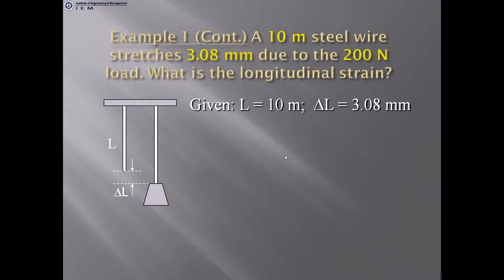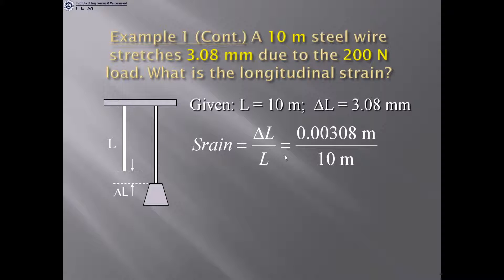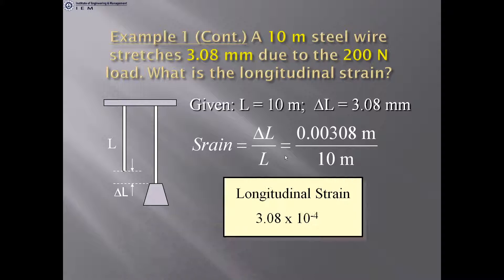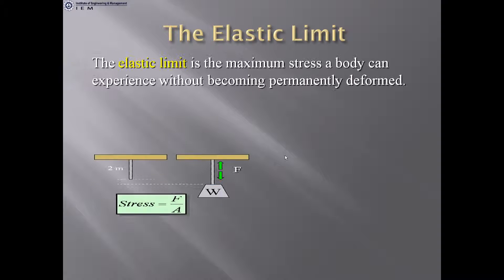A 10-meter steel wire stretches 3.08 mm due to the 200 N load. Find the longitudinal strain. Given L = 10 m and ΔL = 3.08 mm = 0.00308 m. Strain = ΔL / L = 0.00308 / 10 = 3.08 × 10⁻⁴. This is a dimensionless quantity, so it has no units.